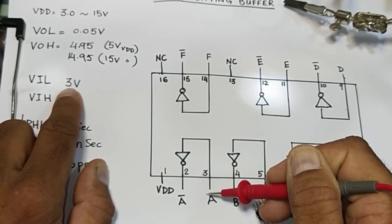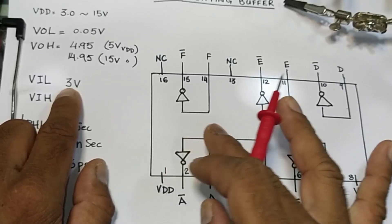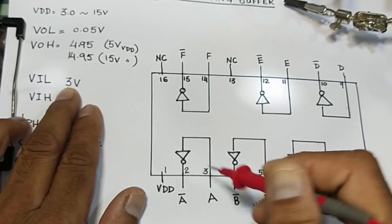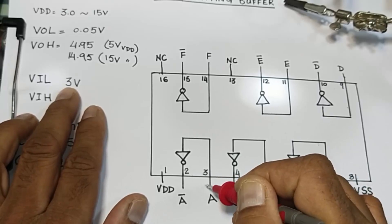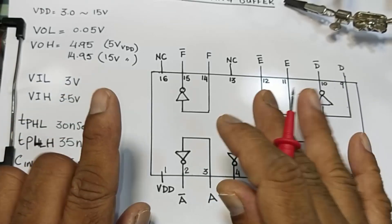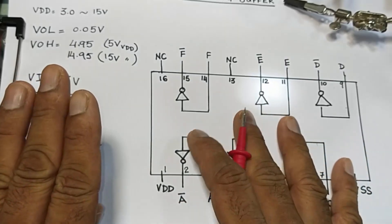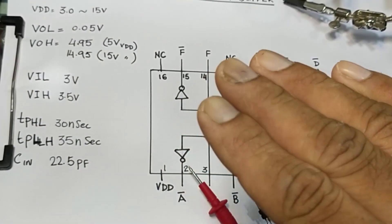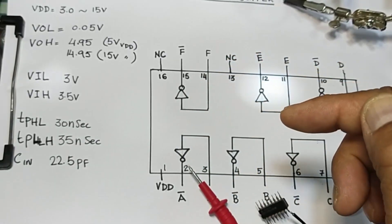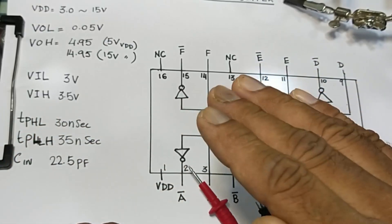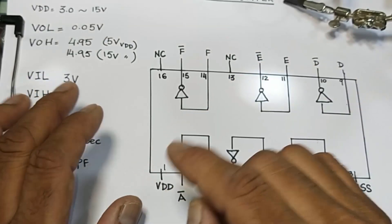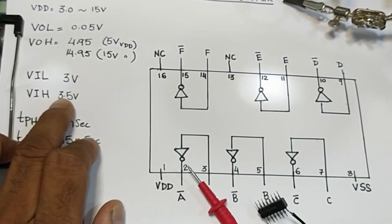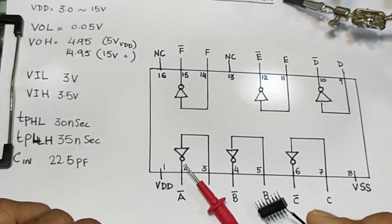VIL — input voltage low — is the logic level. Less than 3 volts and this IC will consider it as zero volt. The logic comparator will compare: if the input voltage at pin three is less than 3 volts, it is considered zero. TTL and CMOS logic ICs have two conditions — high or low. VIH — input voltage high — is 3.5 volts or above; at that level the voltage will be considered logic high.